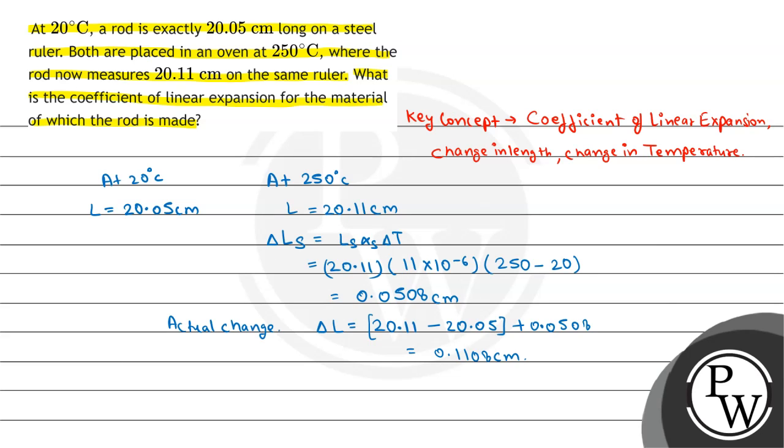This was changing due to temperature. Now we've calculated the actual change. So coefficient of linear expansion will be delta L divided by delta T. Putting in the values, that is 0.1108, and this was 250 minus 20, that is 230. So that comes out to be 4.81 into 10 raised to power minus 4 per degree Celsius, and that is the final answer.